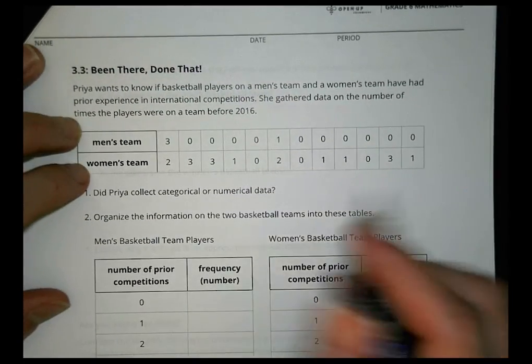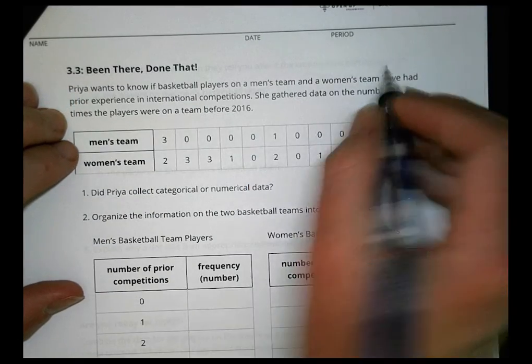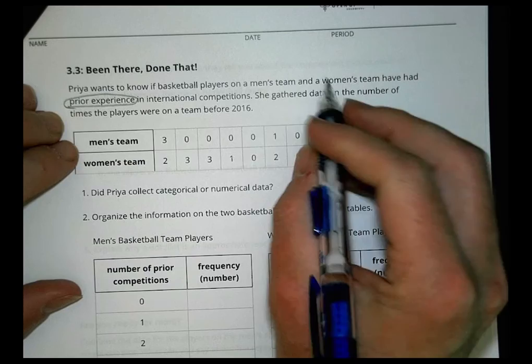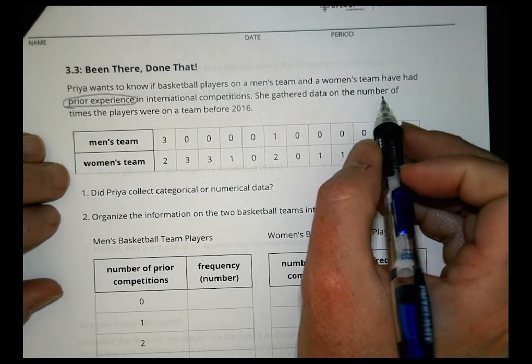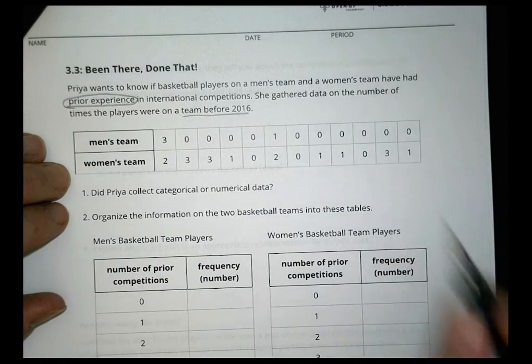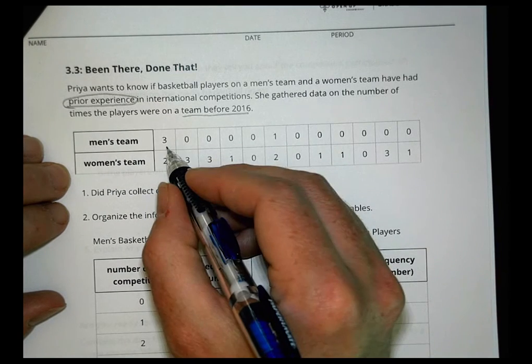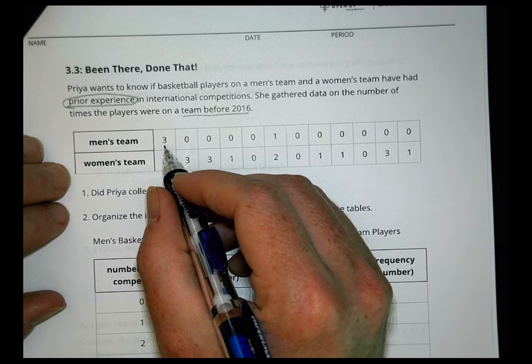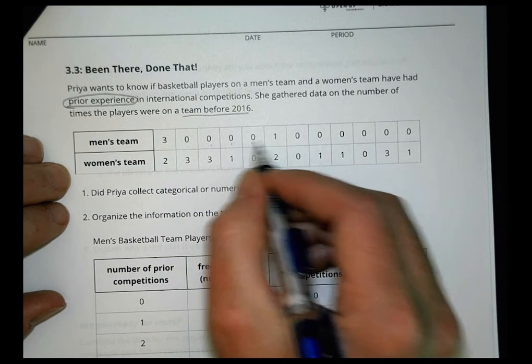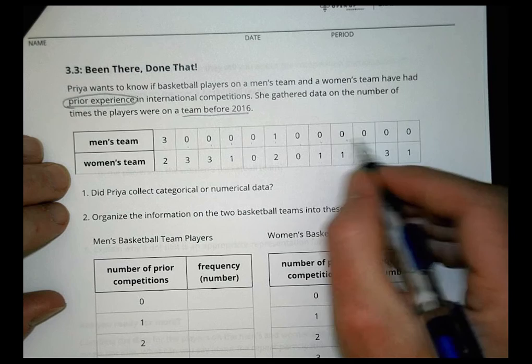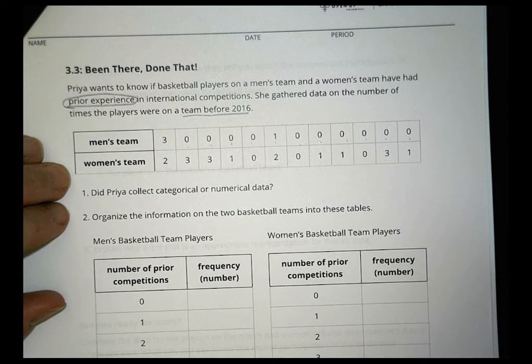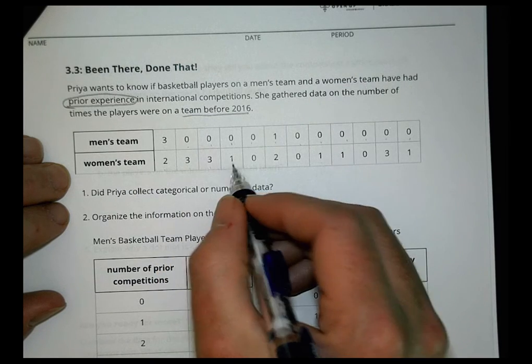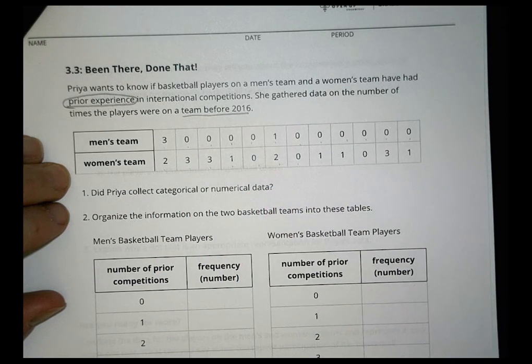Pryor wants to know if basketball players on a men's team and women's team have had prior experience in international competitions. She gathered data on the number of times the players were on a team before 2016. So on the men's team, there were one guy had been on a team three times, zero, zero, zero, zero, one time before, zero, zero, zero, zero, zero, zero. So lots of people had never been on a team. The women's team, we had two times, four, three, three, one, zero, two, zero, and so on.